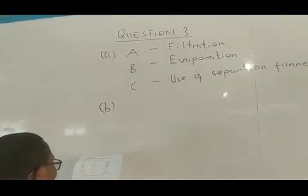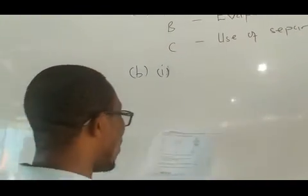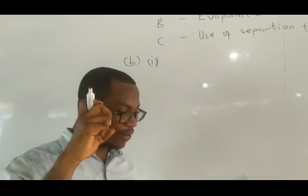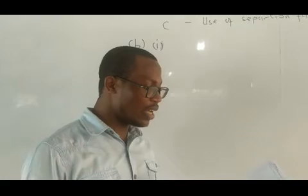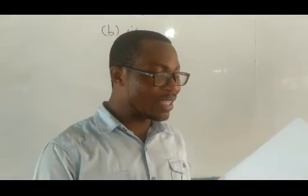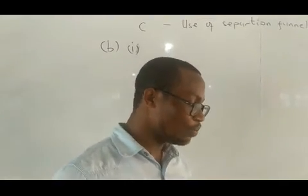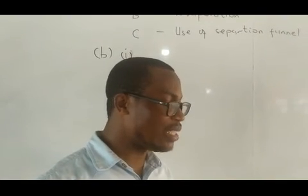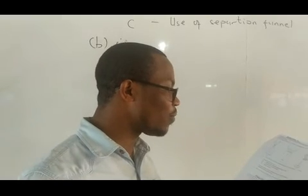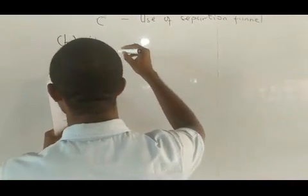Question B asks which setup is used to obtain clear water from a suspension of chalk in water. The method used for separating the components of a suspension of chalk in water is filtration. If you remember what we did in the previous session, we listed a mixture of chalk particles in water as an example of a mixture that can be separated by filtration. So the setup used is the filtration setup, which is setup A.